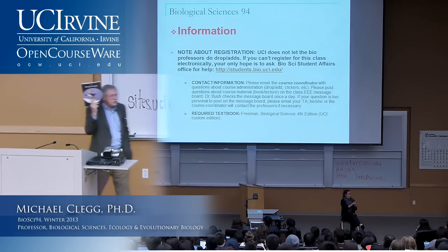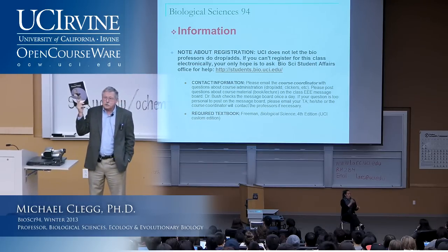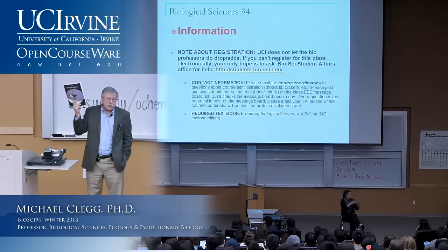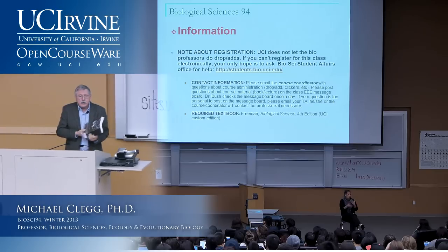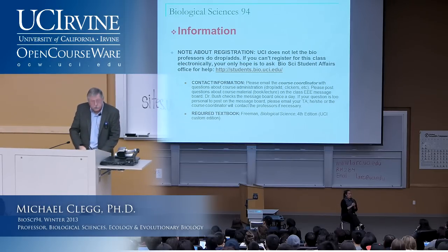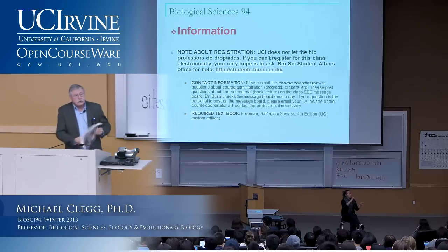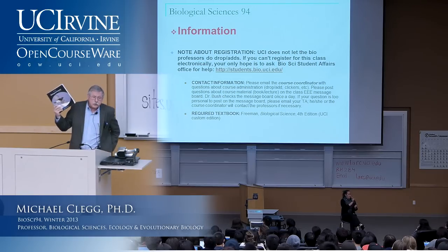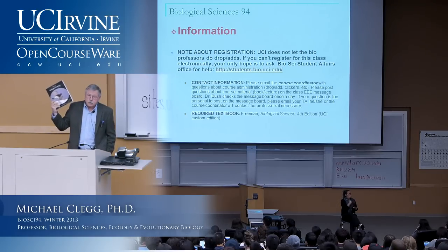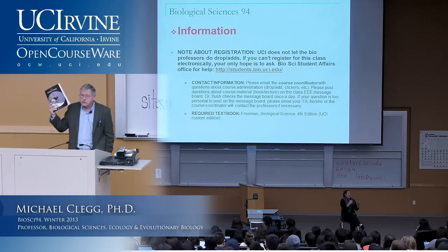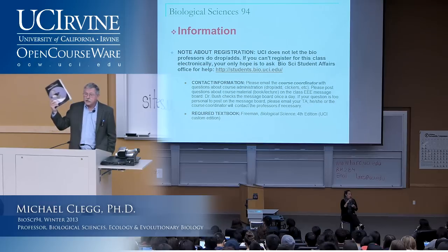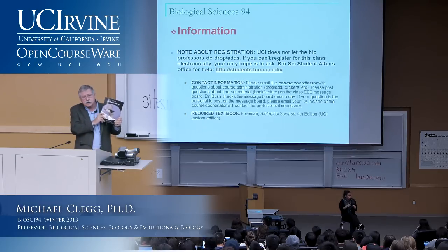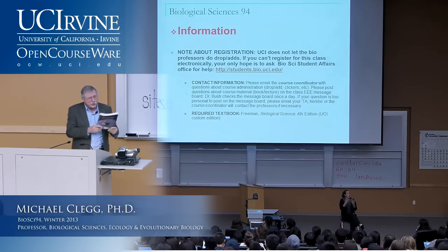This is the special UCI edition, which only includes the chapters we're going to cover in this course, and it's a lot cheaper than the big book, but you can buy either. It's the fourth edition. There are significant differences between the two editions, so you really must have the fourth edition. I'll be lecturing from the fourth edition and will try to stay closely to the textbook material to make it as easy as possible for you to get a high grade.